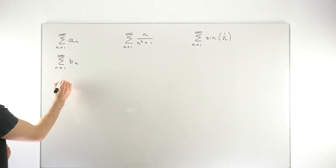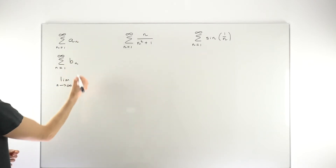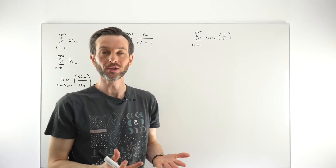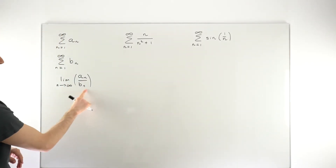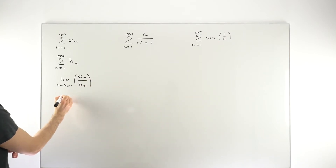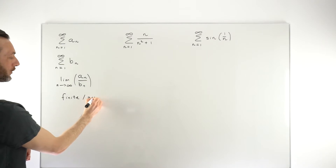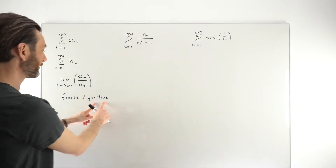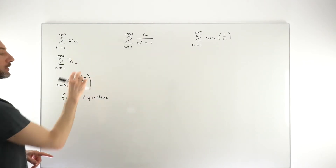The limit comparison test tells us that if we take the limit as n tends to infinity of the quotient a_n over b_n, depending on the result, we can say whether or not the two series act in the same way. The result we're looking for is that this limit comes out to be some finite positive value - it just has to be positive and finite, so it can't be positive infinity.